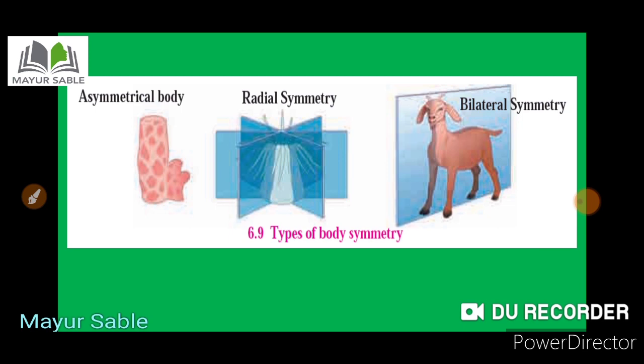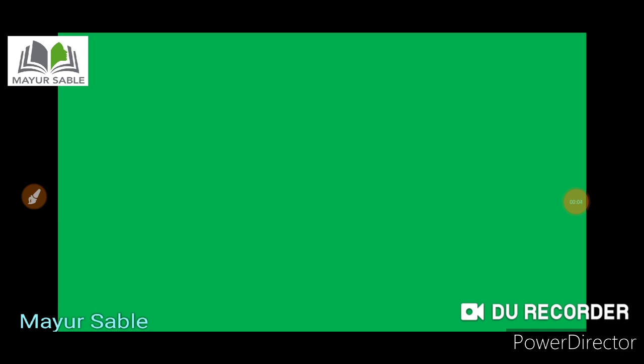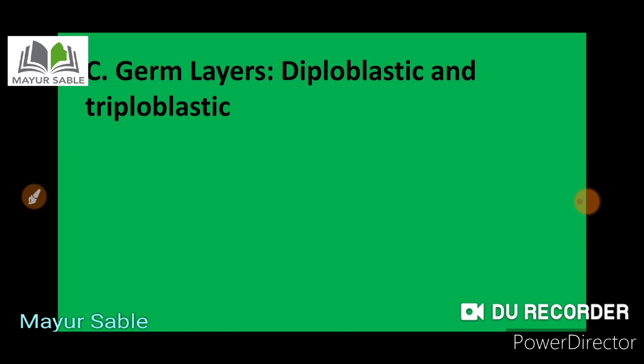In this manner we studied body symmetry as an important criteria for the new system of classification. In the diagram you can see the asymmetrical body, radial symmetry, and bilateral symmetry. The third important criteria taken into consideration is the germ layers. It is observed whether the animal is diploblastic or triploblastic.